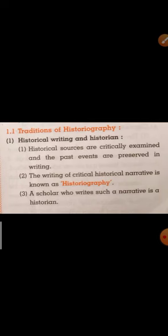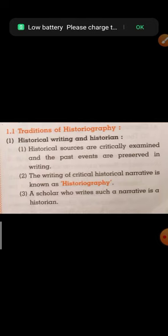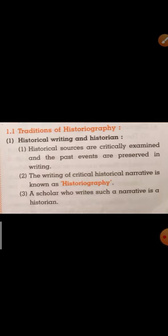The next topic discussed in the chapter is the tradition of historiography — historical writings and historians. Historical sources are critically examined and the past events are preserved in the form of writing. All available sources are analyzed properly and then preserved as written records. The writing of a critical historical narrative is known as historiography, and the scholar who writes such a narrative is known as a historian.